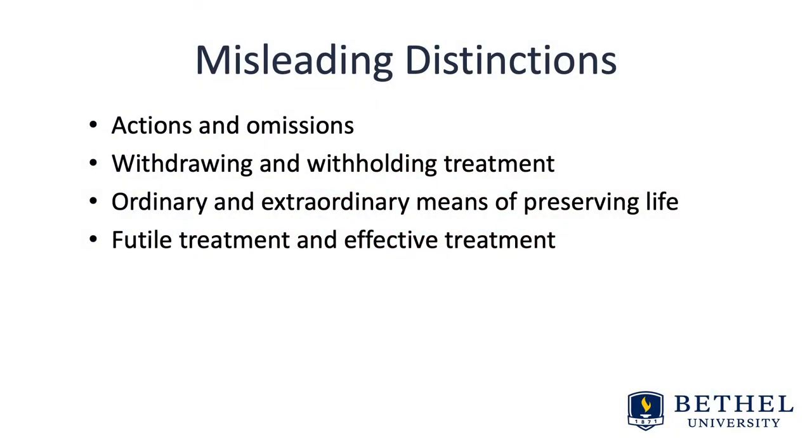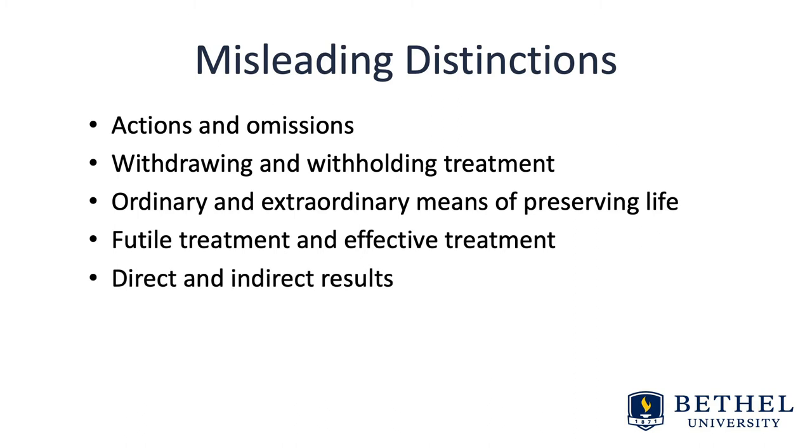The last distinction is the difference between direct or intentional results and indirect or unintentional results. For example, DeVetter explains the direct and intentional result of an appendectomy is to remove the appendix. The indirect and unintentional results of an appendectomy are pain, trauma, and risks such as infection. DeVetter cautions against this distinction using the argument that we must be responsible for all known effects, not just the intentional ones. We must decide whether our action is reasonable, which must take into consideration both intended and unintended results.